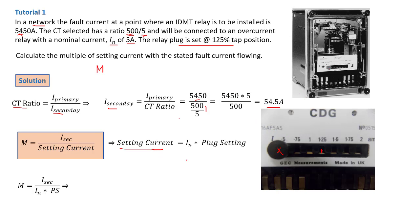Having found your setting current, you can then replace it. IN times the plug setting. That will mean your M is 54.5 divided by 5 times 1.25. That gives you an M value of 8.72. This is how you find your multiple of setting current.